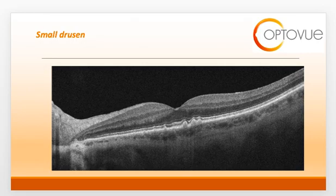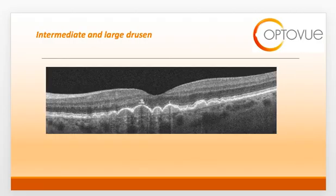OCT has taken on an instrumental role in the grading of AMD. We use the structural changes seen on OCT to categorize AMD into early, intermediate, and advanced stages. Small drusen are 63 microns in diameter or less. Intermediate drusen are 63 to 125 microns in size, whereas large drusen are 125 microns or greater.